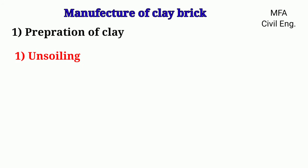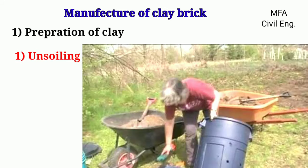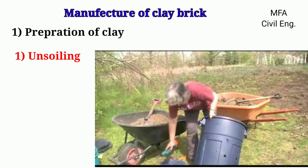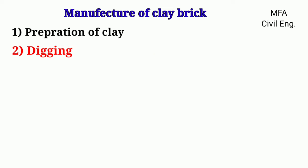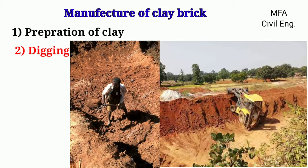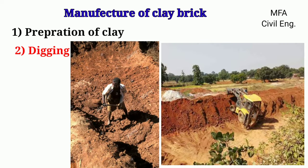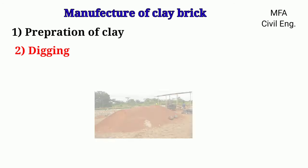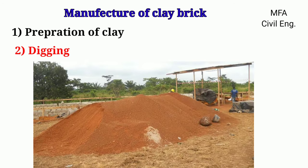Unsoiling consists of removing vegetation and impurities in the topsoil. Digging is the process of excavation of clay. Clay is dug manually or by machine and heaped up to a certain height above the ground.